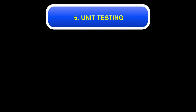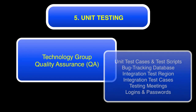Then we move into the fifth piece, which is unit testing. The unit test cases and test scripts will be created in a unit test plan, and the business group has to sign off on that. There's going to be a bug tracking database to keep track of bugs. An integration test region will be set up — the QA team is going to set up and verify connectivity between all required systems, internal and external. They'll make sure only one test region is set up for all integration testing, and begin setting up test cases for the integration test. During this period, the project manager will hold daily testing and bug report meetings.